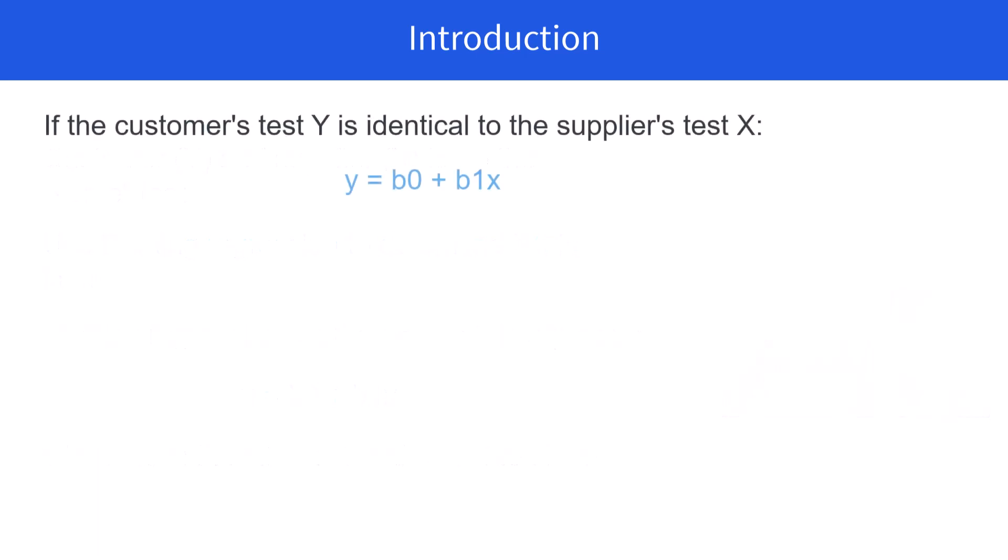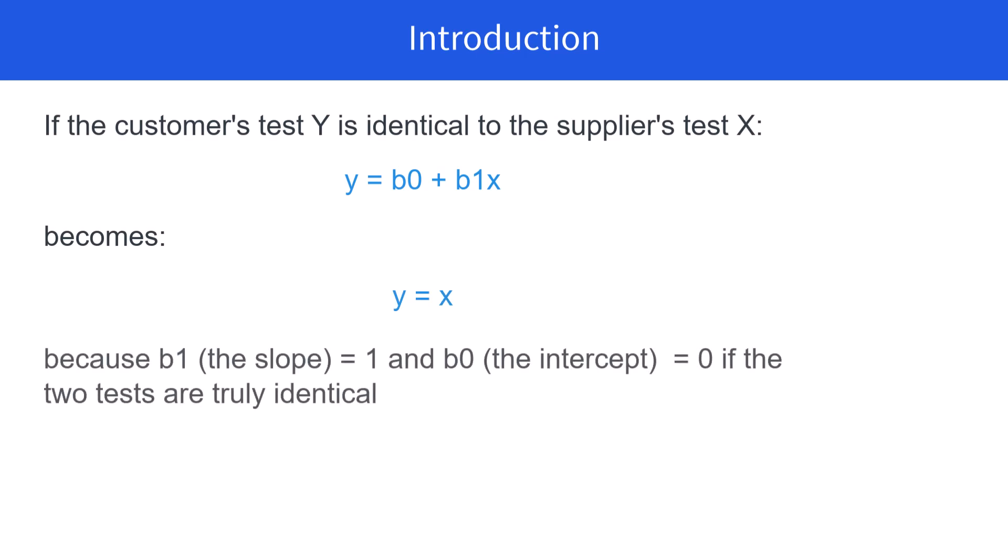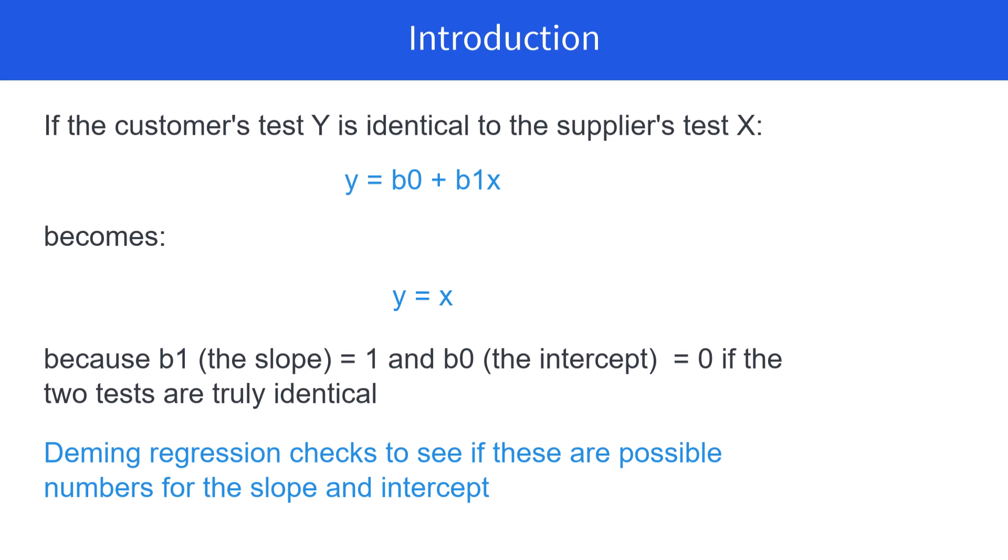So if the customer's test is identical to the supplier's test, that equation is going to become Y equals X, because B1 the slope is 1, and B0 the intercept is 0. And Deming regression checks to see if these are the possible numbers for the slope and the intercept.